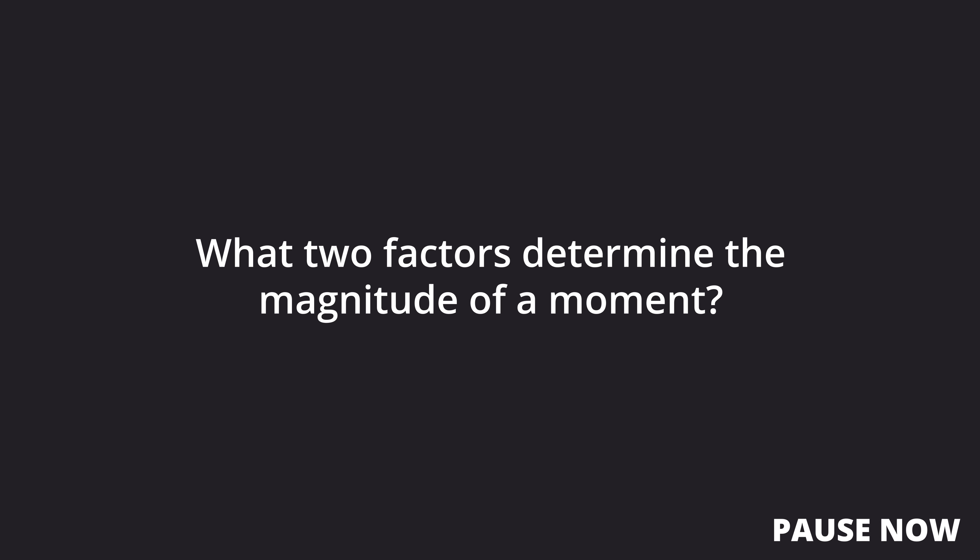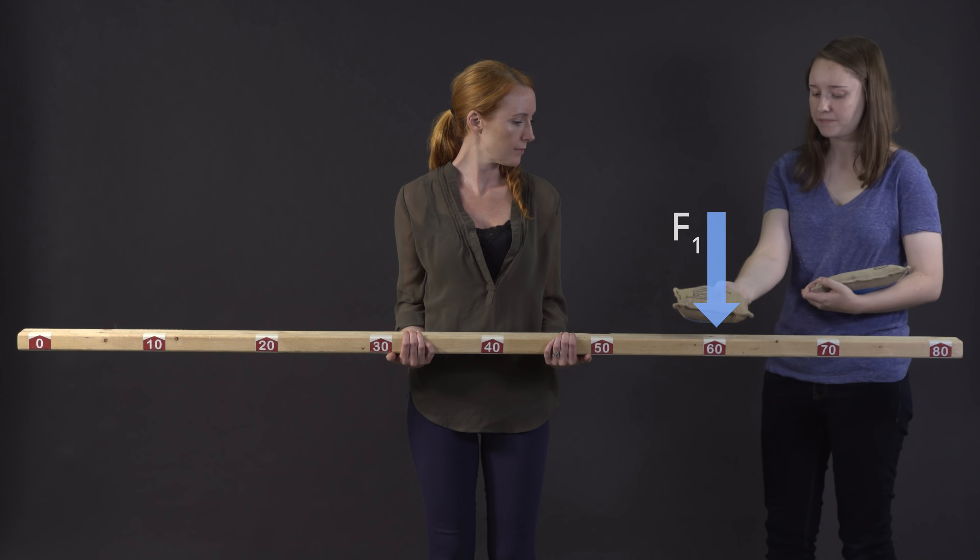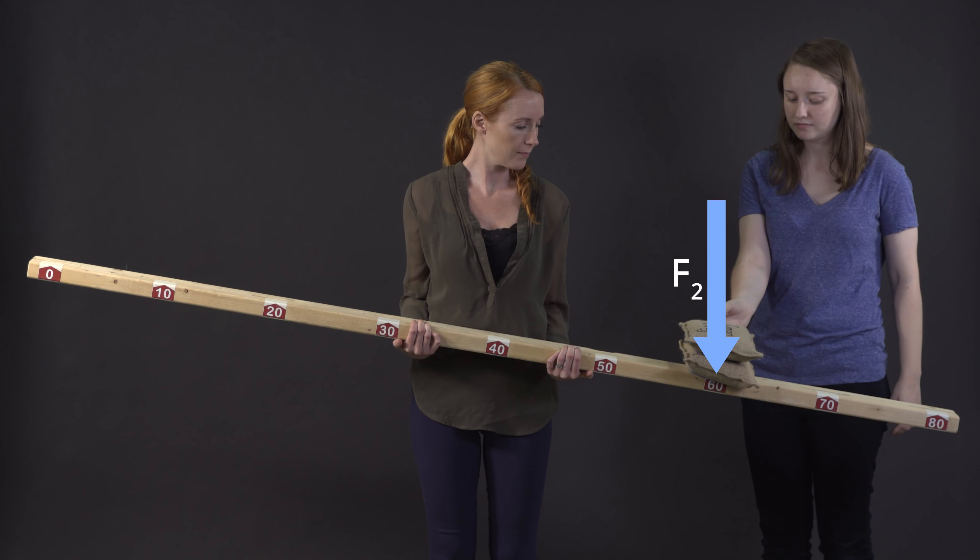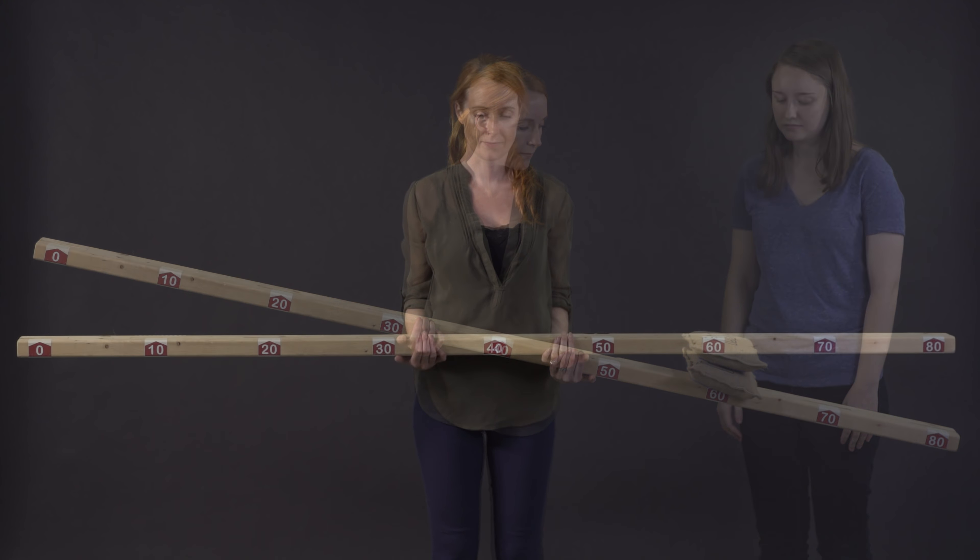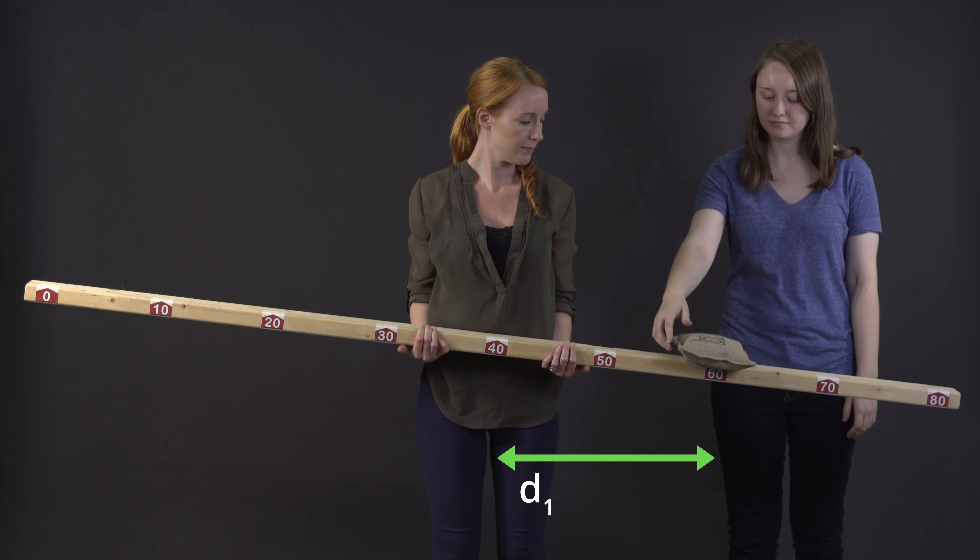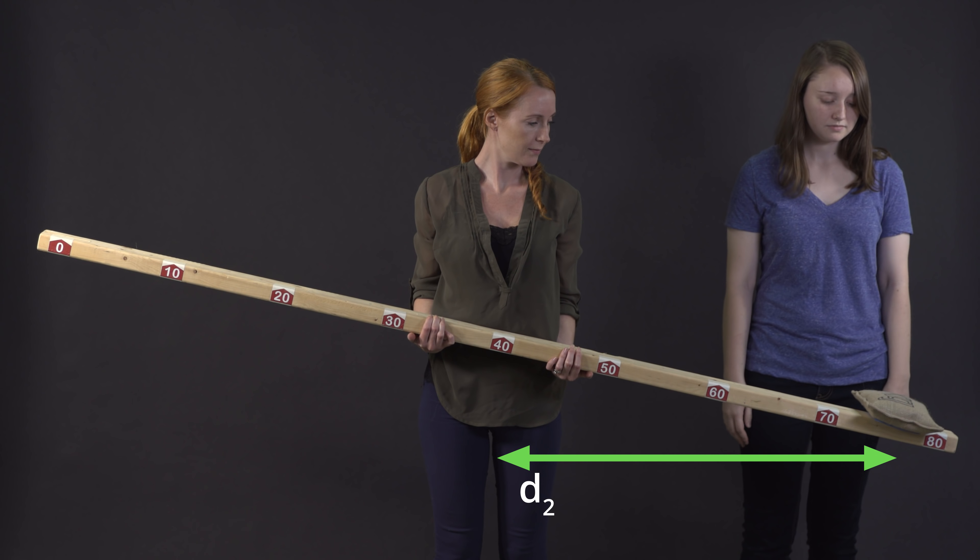Two factors determine the magnitude of a moment. Can you guess what they might be? To answer this question, let's consider a beam supported by two hands near its center. If we place a weight on the right side, it causes this beam to rotate clockwise. Adding a second weight increases the moment that is generated. In addition, if we move a weight from one location to another that is further away from the supports, a greater moment is generated.